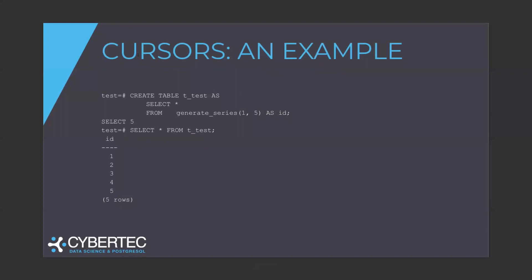Let's create a simple table. We've got to CREATE TABLE t_test, and what we do here is use the generate_series function, which you might have already seen on this channel a couple of times, because it's the best way to create just a small dataset with a couple of rows. You don't have to insert anything — it just generates a sequence of numbers. In my case, it's going to produce five rows: one, two, three, four, five. We're going to make use of this dataset throughout this video.